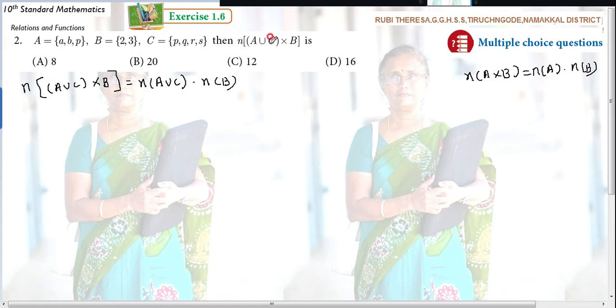So N of B, very well you can write. N of B is equal to what? N means what I told you? Cardinal number. Number of elements present in the given set. You have to count the number of elements. How many elements are here in set B? 2. So cardinal number of B is 2.